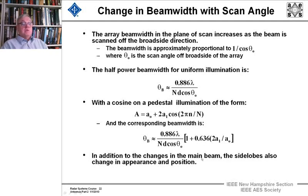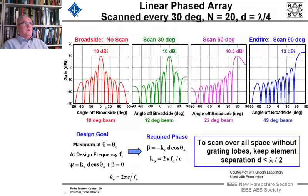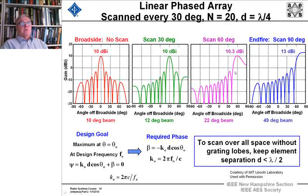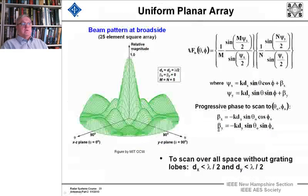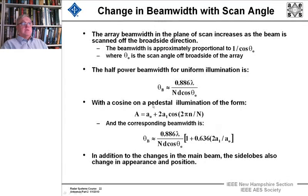In addition to changes in the main beam, the side lobes also change in appearance and position, and that was obvious when I showed you before. And I'm going to go back for a minute. You can see that the shape of the beam changed, and the width of the beam changed. 10, 12, 22, 49, and there. That's what that tells you in a picture, what I just showed you, and this tells you in words and formulas.